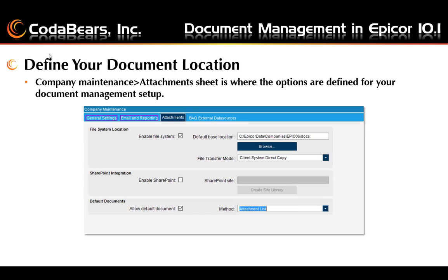The method drop-down for the default documents defines how the default documents will be stored — either in the file system, in the SharePoint integration, or as an attachment link.